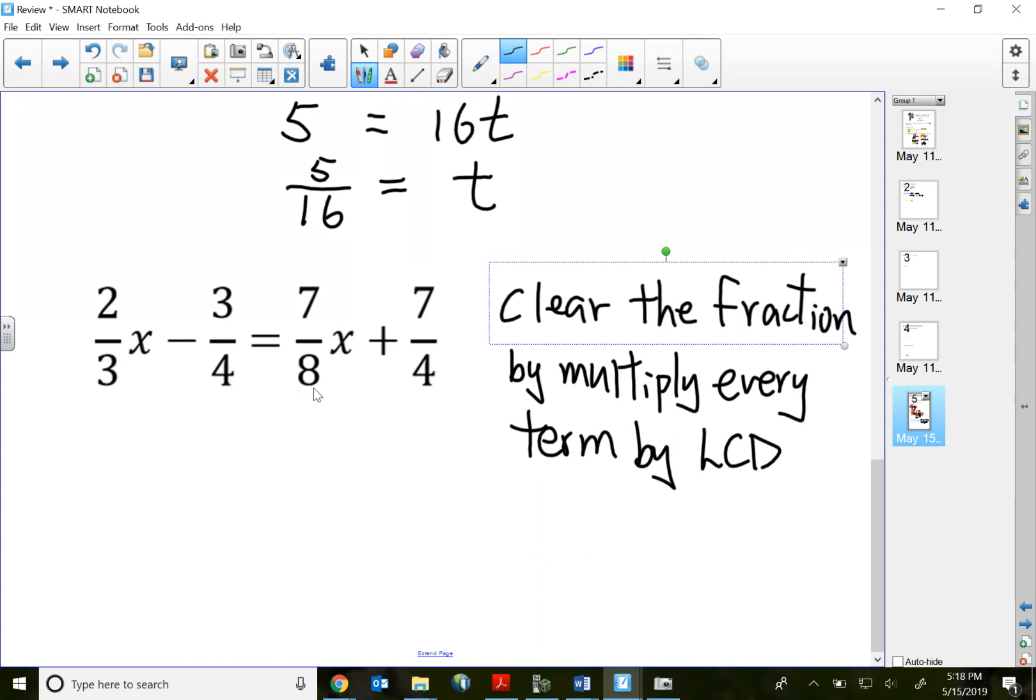So that means 3, 4, and 8 can all go into 24. So 24 is our LCD. The technique is what I'm trying to show you here: multiply every term by the LCD.